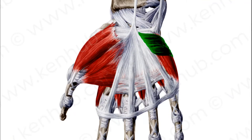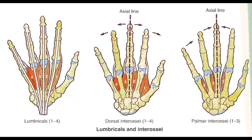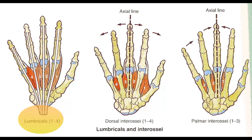There's a muscle known as palmaris brevis; it is not considered a hypothenar muscle but it is close to that vicinity. Finally, like the foot, we are down to two other muscles: the lumbricals and the interossei — the dorsal and the palmar interossei, and the four lumbricals.